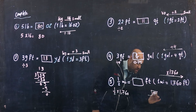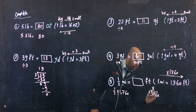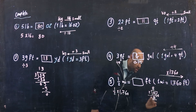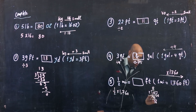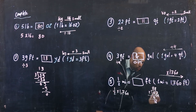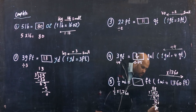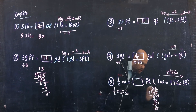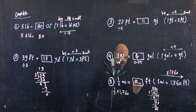Divide 1,760 by 2 using long division: 1 divided by 2 — carry over; 17 divided by 2 equals 8, remainder 1; drop down 6 to get 16; 16 divided by 2 equals 8; drop down 0; 0 divided by 2 equals 0. The answer is 880.